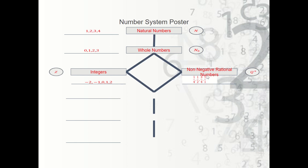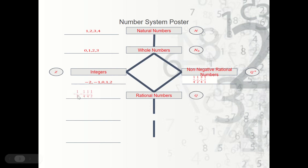Then we learned that there are other rational numbers — there are negatives as well. The rational numbers include both negative and positive fractions. The symbol is Q, and some examples are negative one half, negative one fourth, one fourth, and one half.